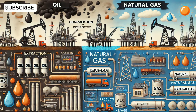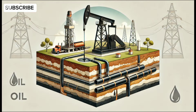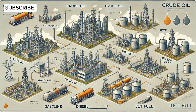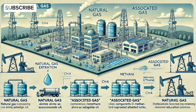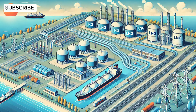The difference in composition directly impacts their extraction, processing, and usage. Oil is often pumped from underground reservoirs using drilling rigs, and once extracted, it goes through refining processes to produce fuels like gasoline, diesel, and jet fuel. Natural gas is either extracted alone or alongside oil as associated gas, processed to remove impurities and separated into components such as methane and ethane. One key difference: natural gas requires additional infrastructure like pipelines and liquefaction facilities to transport and store it efficiently.